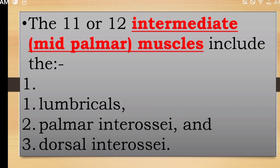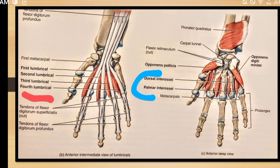Here we have two groups discussed. The third group is the intermediate or mid-palmar muscles. These are: lumbricals, palmar interossei, and dorsal interossei. On the left side of the picture, these are the lumbricals — first, second, third, and fourth lumbricals. On the right side of the picture are the dorsal interossei and palmar interossei.